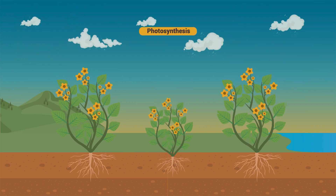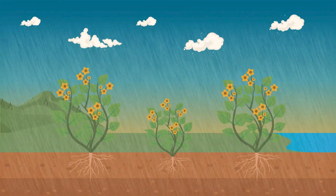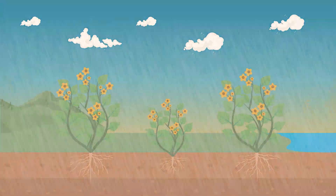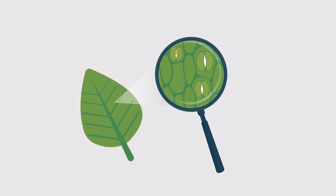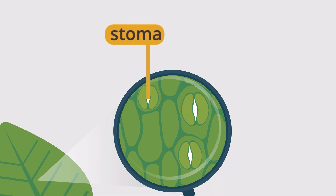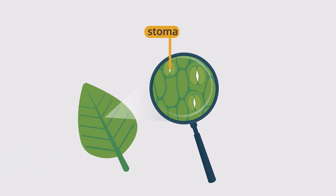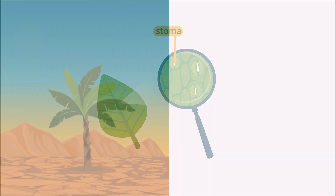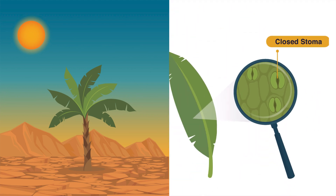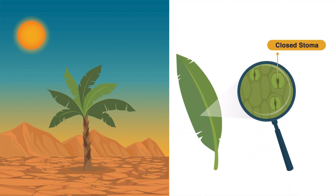When there's more rainfall, plants are able to absorb more carbon dioxide. This is because plants have special cells in their leaves called stoma that help them reduce water loss through evaporation. In dry conditions, these plant cells want to keep a smaller opening to avoid losing water as they absorb carbon dioxide.